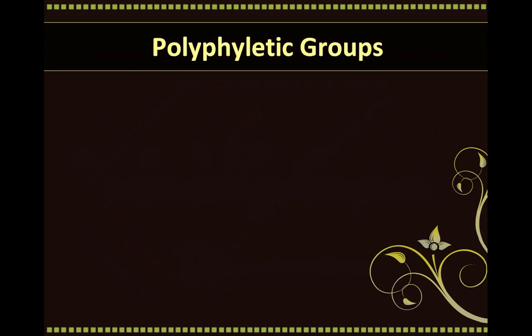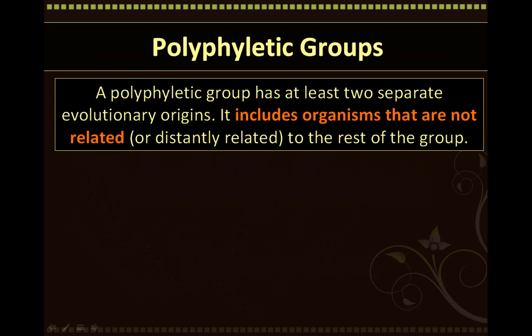Another type of incorrect grouping is polyphyletic groups. A polyphyletic group has at least two separate evolutionary origins. It includes organisms that are not related, or those that are only distantly related to the rest of the group.